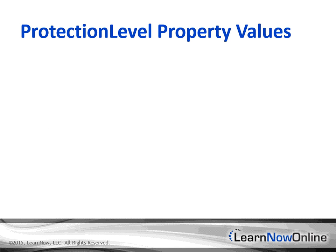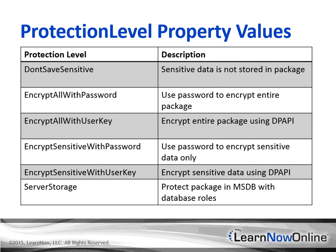You need to choose the appropriate protection level for a package's protection level property. If you change the protection to a level that requires a password from a level that doesn't, you'll need to provide a password at the prompt. The first option is Don't Save Sensitive — this removes all sensitive data from the file, and at execution time you have to supply any missing property values such as usernames, passwords, and connection strings. This has a DTutil value of zero. The second option is Encrypt All With Password — it uses the password you supply to encrypt the entire package, and access requires that password. Without it, you can't open or execute the package. The DTutil value for this is three.